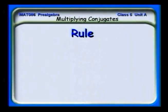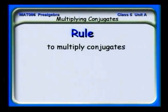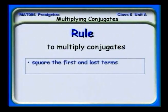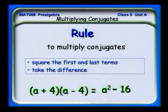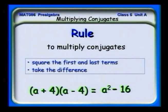We can make what we've been talking about into a rule. To multiply conjugates: square the first and last terms and then take the difference. For example, (a + 4)(a − 4): square the first term to get a squared, square the last term to get 16, and take the difference — a squared minus 16.